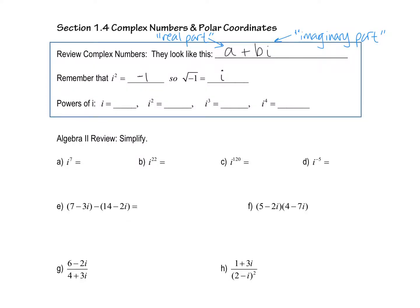Today we're doing a bunch of Algebra 2 review — pretty much everything on this page. This is just a brief refresher on stuff with i: how to FOIL with i, how to combine like terms, and what i squared is. Complex numbers look like a + bi. The first part without the i is the real part; the second part with the i is the imaginary part.